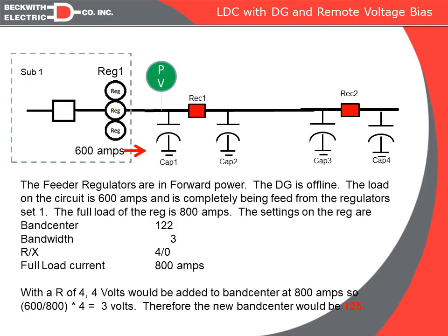The final topic is remote voltage bias, used mainly when line drop compensation is employed in conjunction with downstream distributed generation. Consider a feeder regulator with 600 amps of load and PV generation downstream that is currently offline. With a band center of 122, bandwidth of 3, R of 4, and full load of 800 amps, at 600 amps we apply 3 volts of compensation, setting the bus to 125 volts to keep the load center at 122. Then the DG comes online.